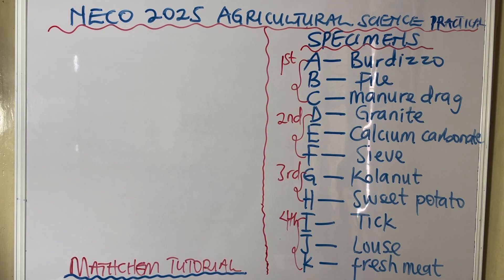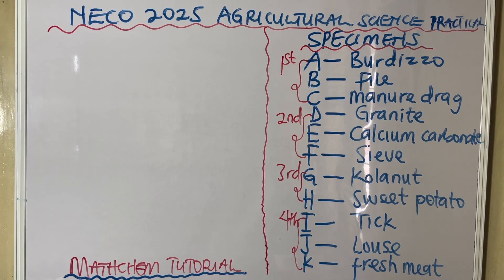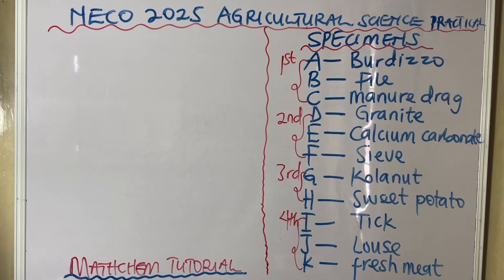Looking at the first category: specimen A is a Burdizzo, B is a file, and C is a manure drag. The Burdizzo is a tool used mostly by veterinary medicine people, or sometimes agricultural science people, to handle animals.